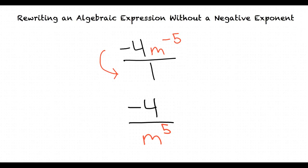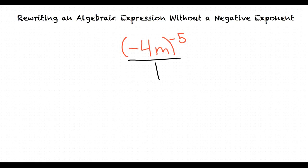Wait, why wouldn't the negative 4 also move to the denominator? If we look at our exponent, it is only attached to our m variable. If there were parentheses around the negative 4 and m, this would indicate that our exponent is attached to both. We only move numbers or variables that are attached to the negative exponent.